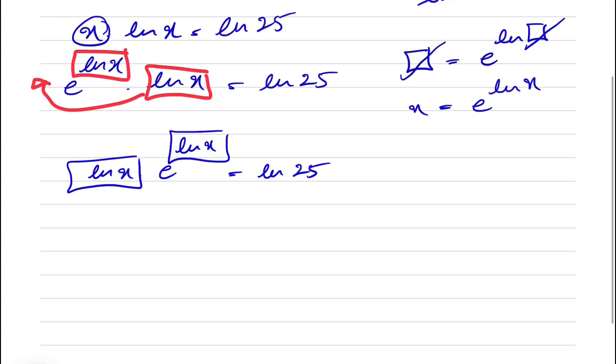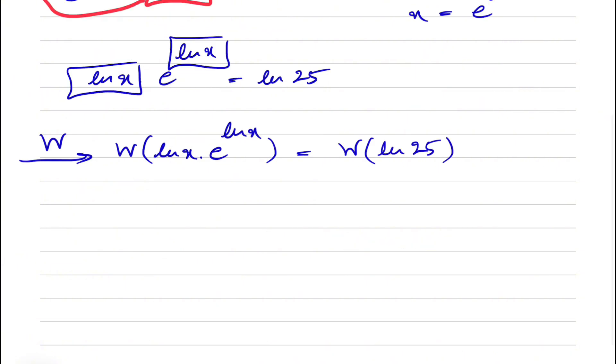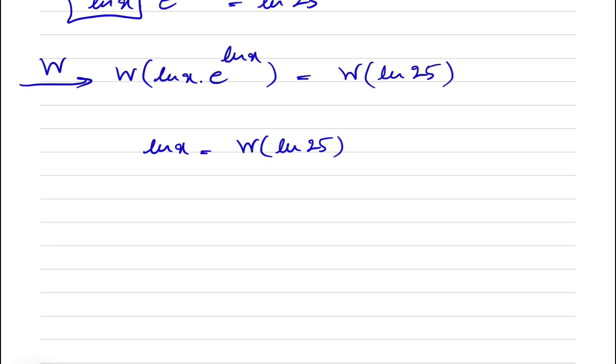It's time to do the Lambert W function. So Lambert W function of ln of x times e to the power of ln of x is equal to Lambert W function of ln of 25. We did all this to get the box out of this, and on the left side we have ln of x is equal to Lambert W function of ln of 25.